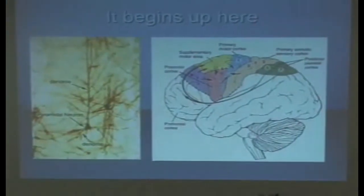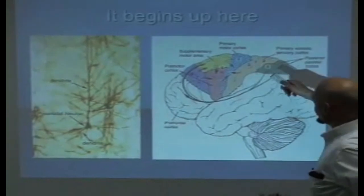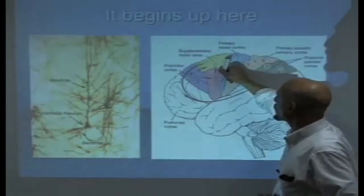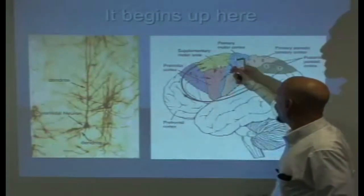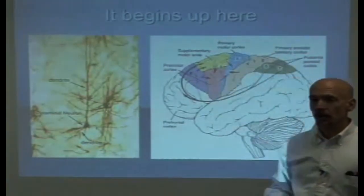So the information begins up here in the brain. Motor activity occurs in the pre-central gyrus, the front part of our brains. Areas 4, 4S, and 6, according to Brodmann.